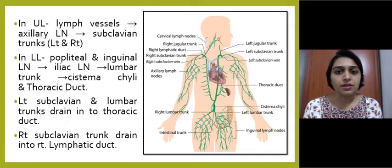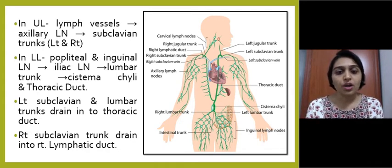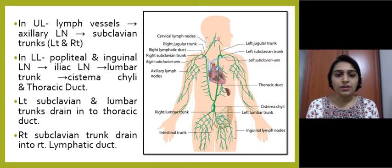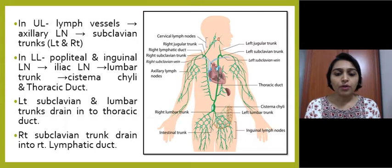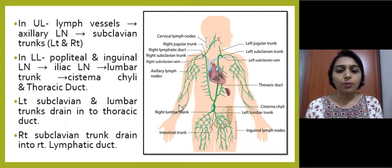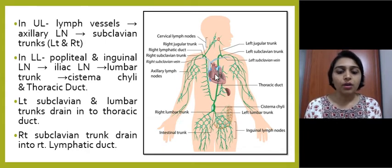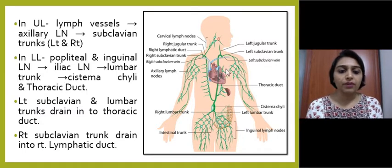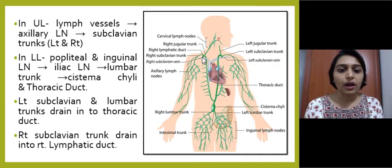In the upper limb, the lymph vessels drain into the axillary lymph nodes, from where there are subclavian trunks on the left and right side. In the lower limb, lymph is drained into the popliteal and inguinal lymph nodes, then into the iliac lymph nodes, and from there into the lumbar trunk, where it joins to form the cisterna chyli and then into the thoracic duct. The left subclavian and lumbar trunk drain into the thoracic duct on the left side, while on the right side the right subclavian trunk drains into the right lymphatic duct.